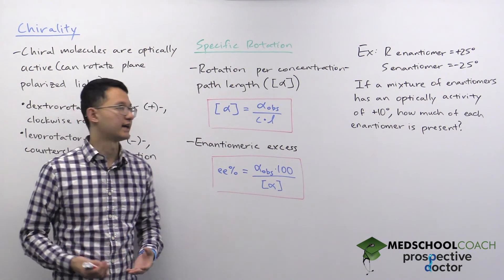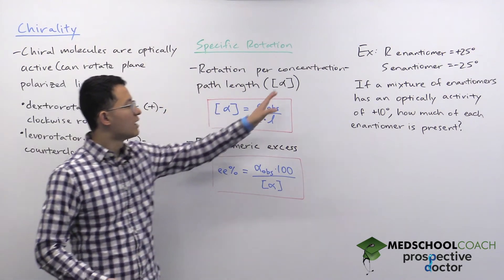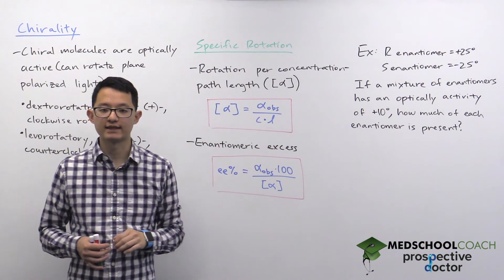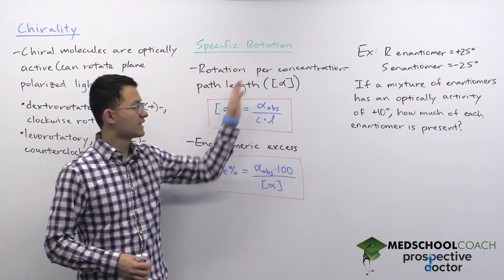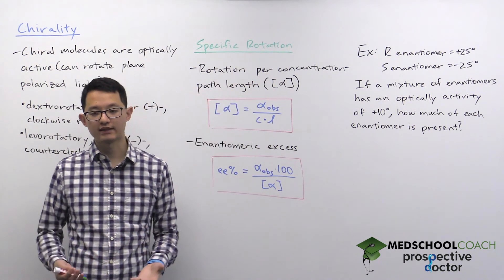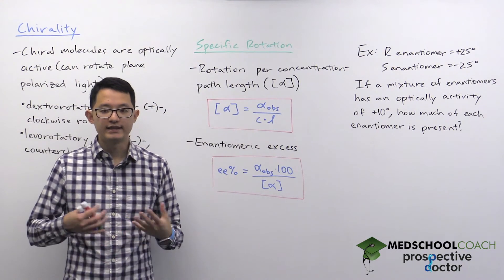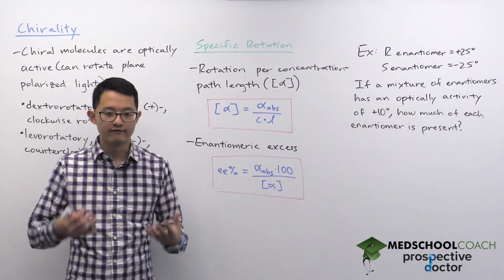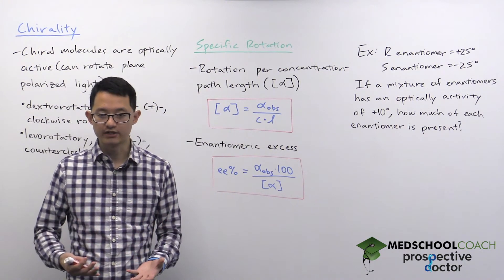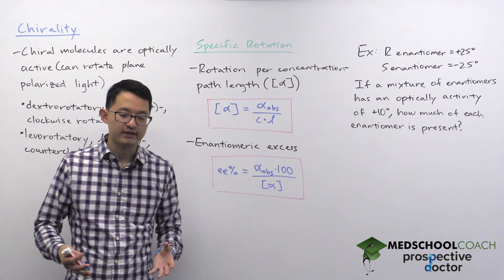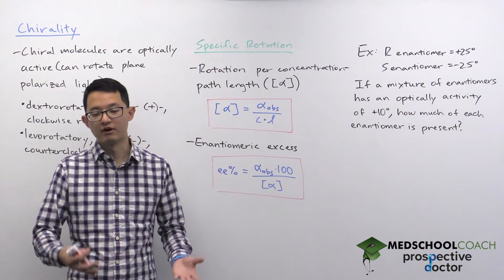Specific rotation is defined as the amount of rotation per concentration and path length. The reason why you have to set these two values, concentration and path length, is because these two values will affect the amount of rotation and that's not dependent on the specific property of the molecule.